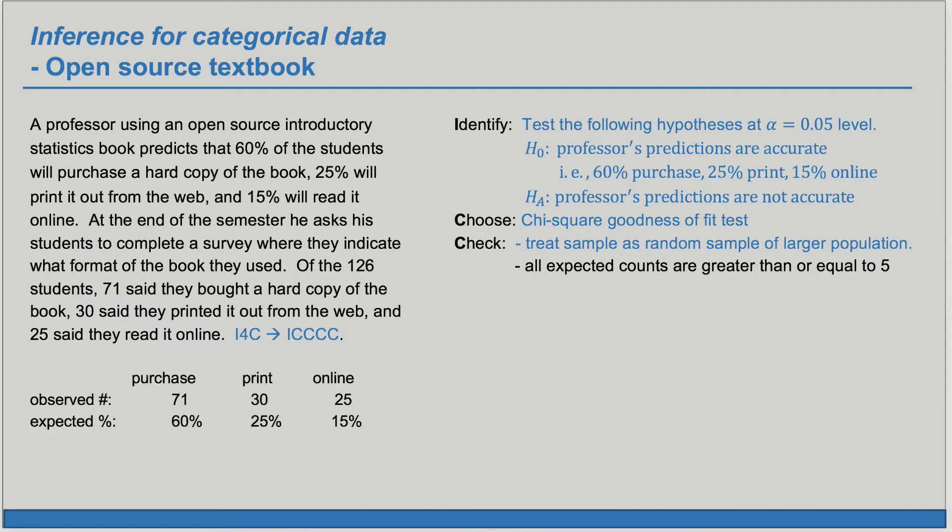First we can see that we have the observed numbers in each category. We have the expected percents based on H sub O. And so now we need the expected numbers based on H sub O. We have 126 students and that's given but we could have added up the three numbers 71, 30 and 25 to get that. That gives us the total of 126.